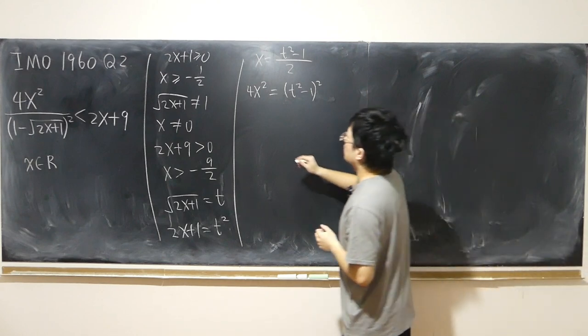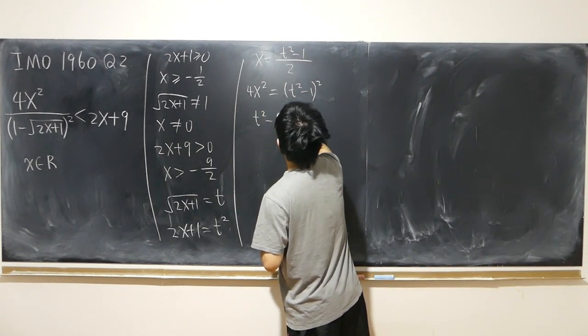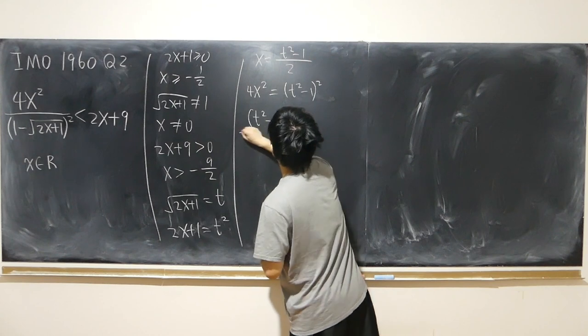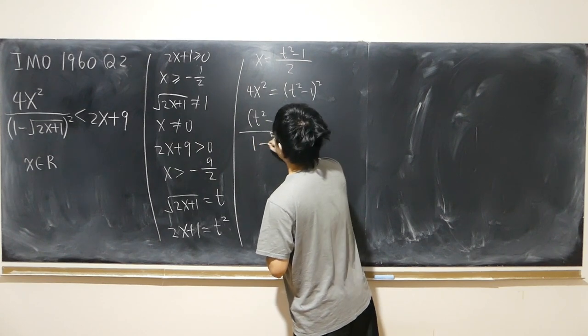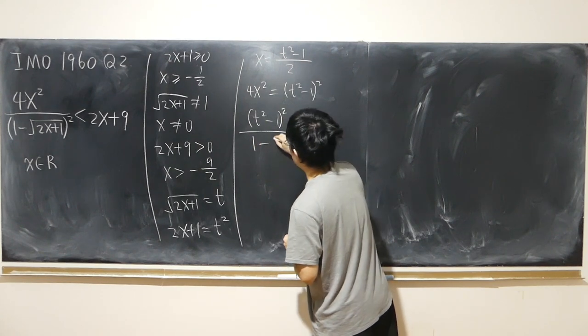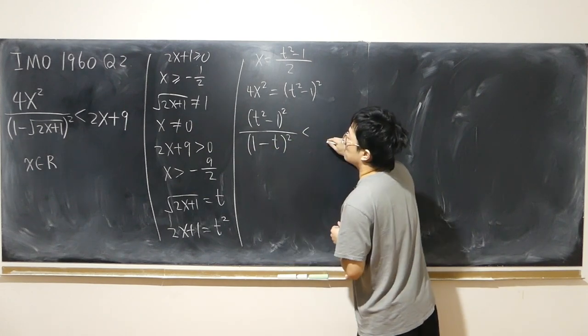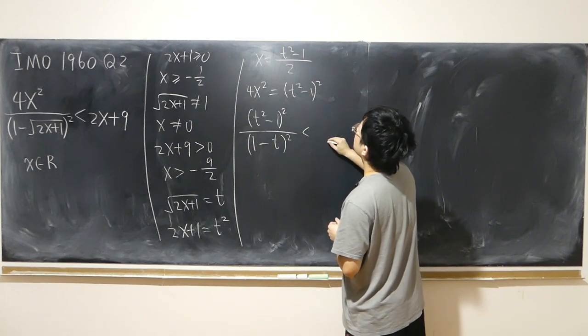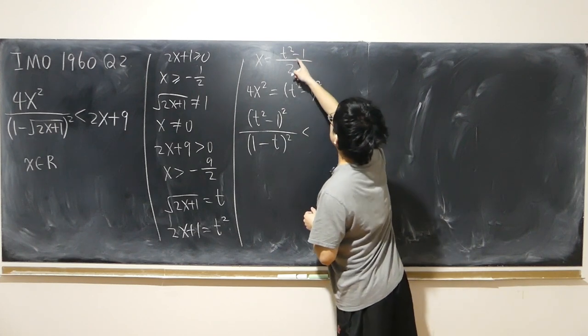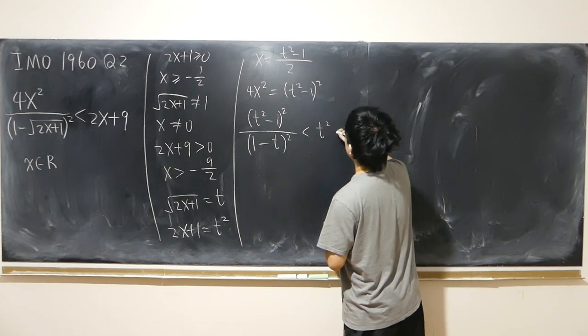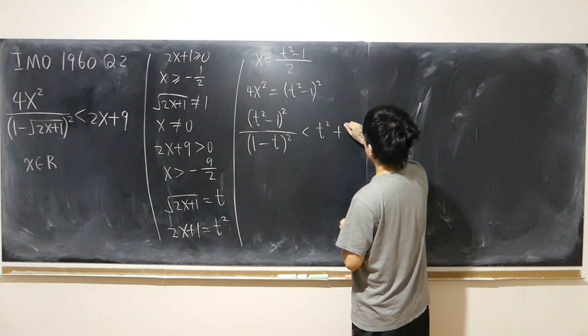So left hand side becomes t squared minus 1 square over 1 minus t quantity squared, less than 1 minus t quantity squared times t squared plus 8. And then 2x plus 9, 2x is t squared minus 1 plus 9, plus 8.